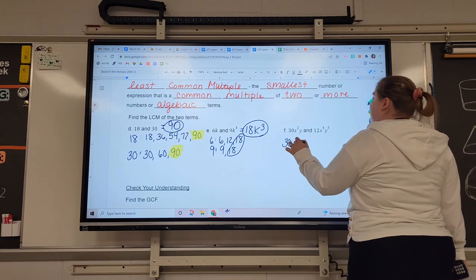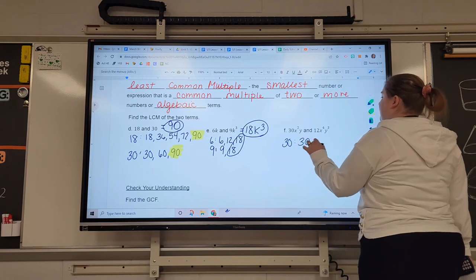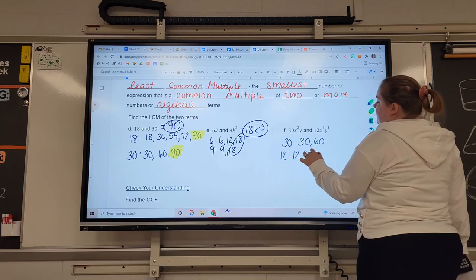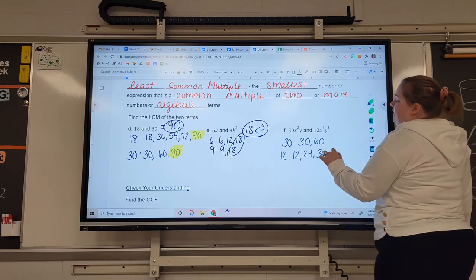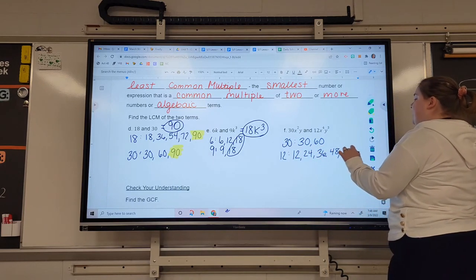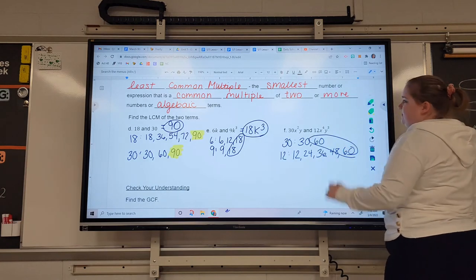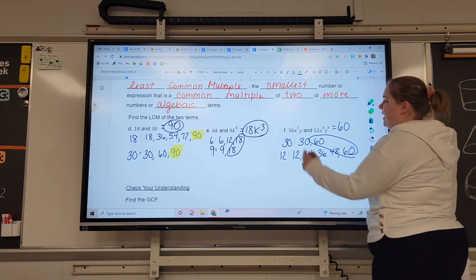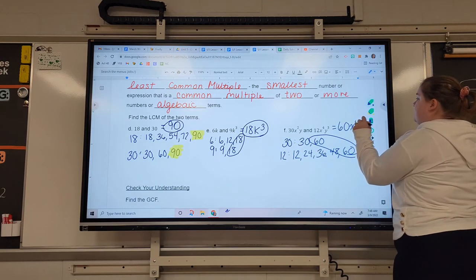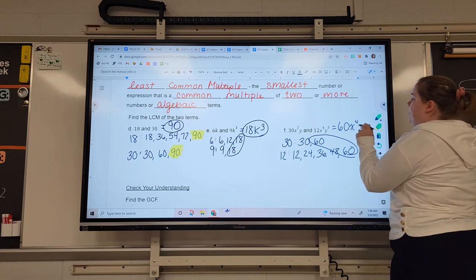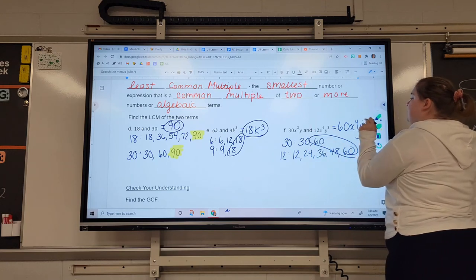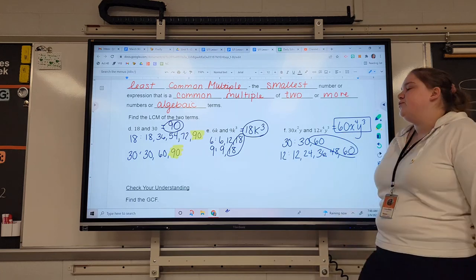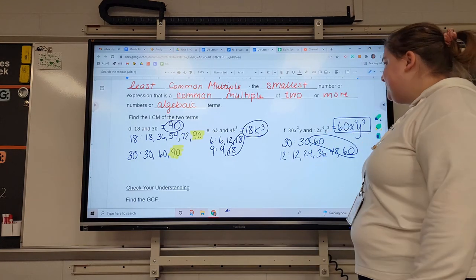30 can become 30 and 60. I see it. Do you? 12 becomes 12, 24, 36, 48, and 60. 60 it is. So they both can become 60. Most amount of X's is 4 of them, because there's 2 here and 4 here. And the most amount of Y's is 3. There's 1 here and 1 here. Least common multiple. Multiple is most.